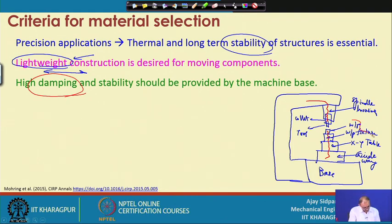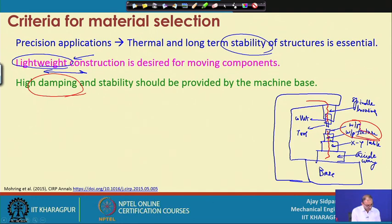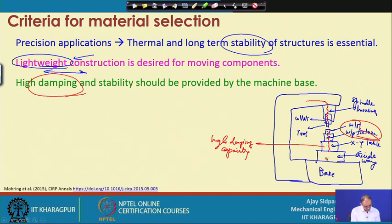The work piece and work piece fixture are external parts that will be frequently changed depending on selection, while the X-Y table and guideway are fixed machine components. When deciding material for the X-Y table and guideway, you have to think about the damping property, because forces at the cutting location will propagate from the work piece through the fixture to the X-Y table. If the X-Y table has high damping capacity, it will absorb the vibration rather than propagating it further.